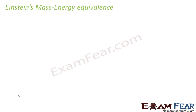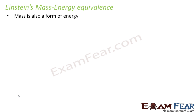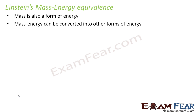Let us first see what mass-energy equivalence is. Einstein told that mass is also a form of energy. Before, during the Newtonian era, mass and energy were considered something different — mass was never compared to energy. But Einstein was the one who told that mass is also a form of energy, and he called this energy 'mass energy' — the energy associated with a mass. He told that mass energy can also be converted into other forms of energy, just as electrical energy, heat energy, or light energy can be converted into different forms.